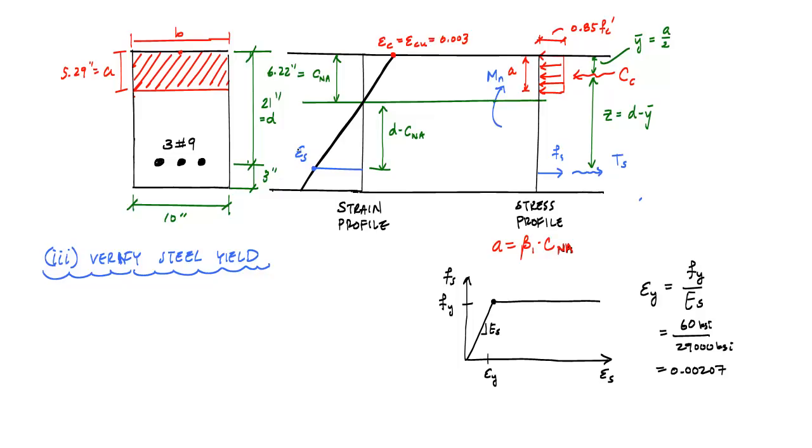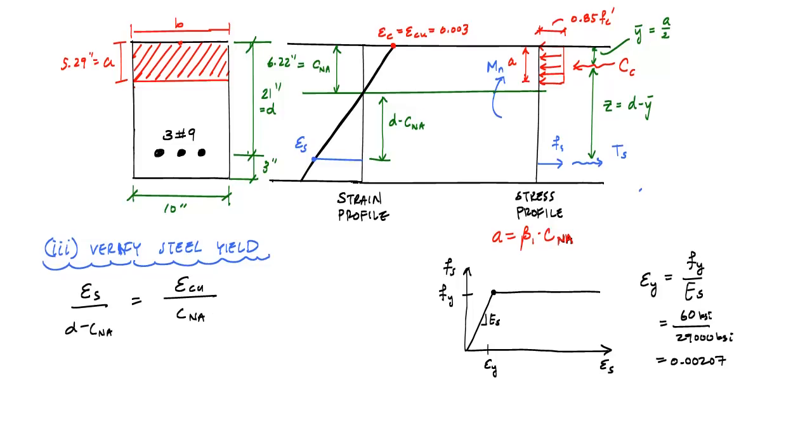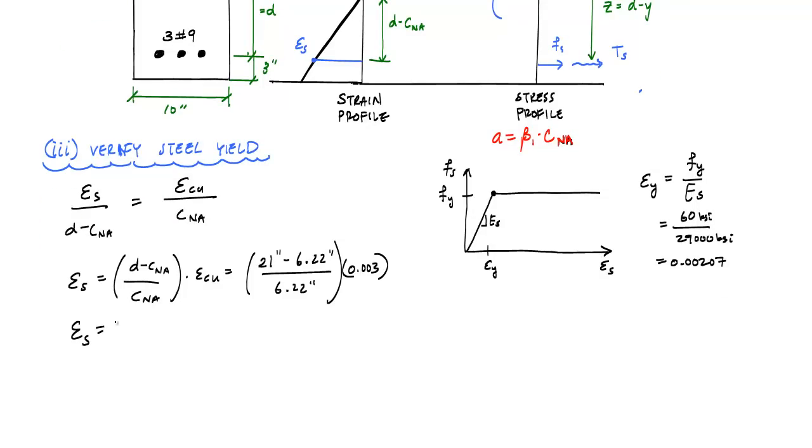So if this epsilon S over here is greater than 0.00207 strain, then we've yielded. So let's go ahead and calculate epsilon S. The way we're going to calculate that is by similar triangles. And if I go ahead and substitute some numbers, I'm going to get that epsilon S is equal to 0.007 strain, which means this number is greater than 0.002. So yes, my steel has yielded.